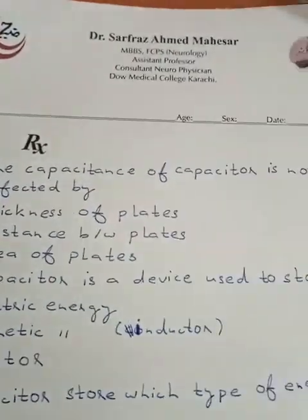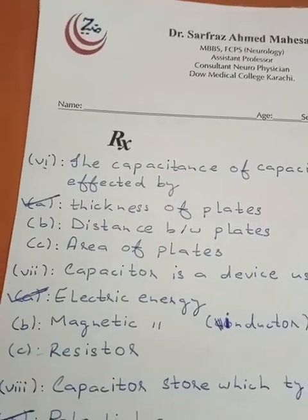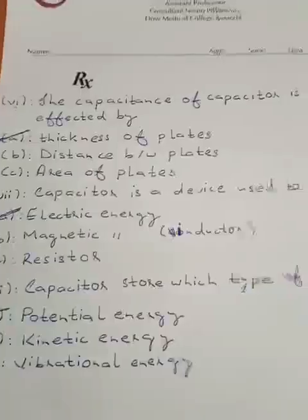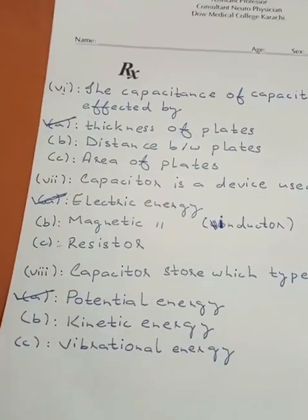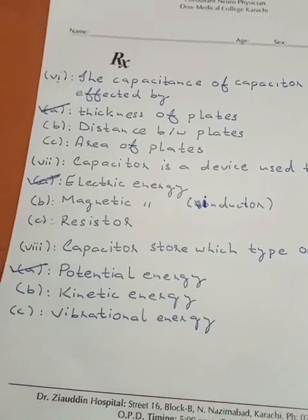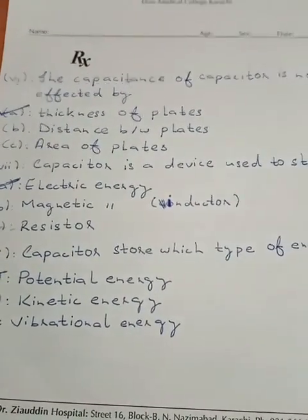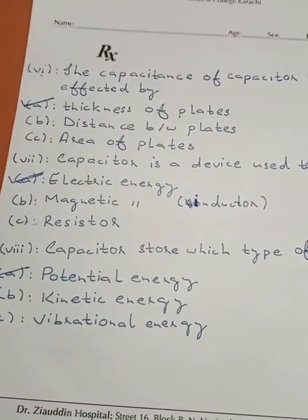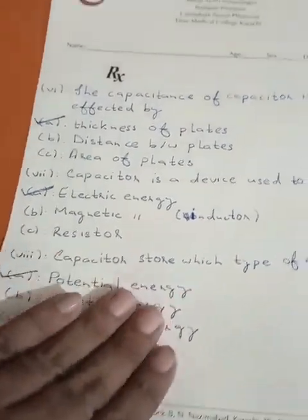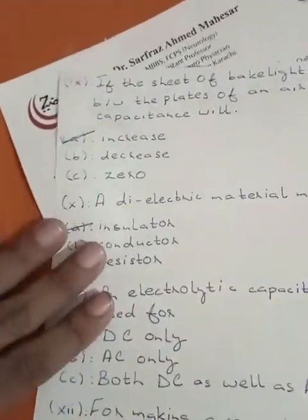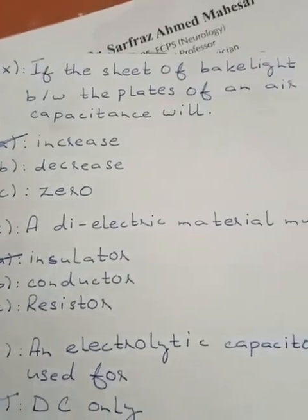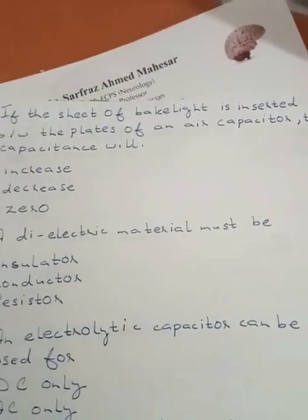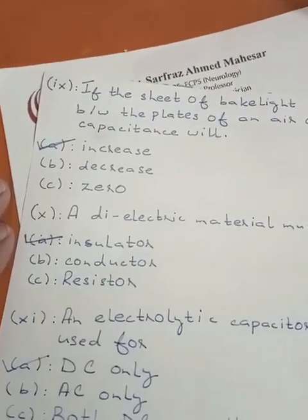Capacitance of a capacitor is not affected by the thickness of the plate, but it is affected by the distance between plates, area of plates, and the dielectric material used. The device is used to store — of course — electrical energy. The capacitor stores which type of energy? The correct answer is potential energy.